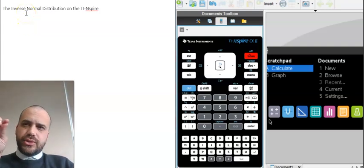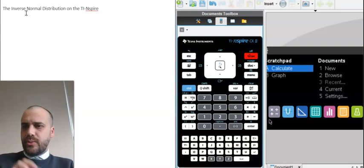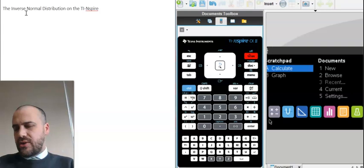So this time we're looking at the inverse normal distribution. Now last time we were trying to find probabilities, this time we're going to know the probability and we're going to try to find the value of the variable. It's easier if I just show you an example.